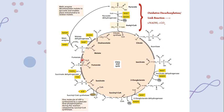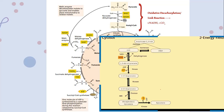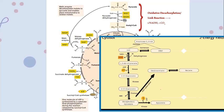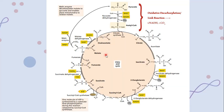Fumarate causes the addition of a water molecule in the presence of the enzyme fumarase and is converted into malate. Malate then undergoes dehydrogenation and is converted into oxaloacetate. From succinate to oxaloacetate, all the reactions are reversible. There is also an alternative pathway: malate, a four-carbon compound, can undergo decarboxylation, releasing one carbon dioxide and forming one NADH, converting back into three-carbon pyruvate, and the whole Krebs cycle starts again.